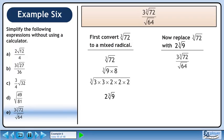Now replace the cube root of 72 with 2 times the cube root of 9. We write the original expression and substitute. Simplify the numerator: 6 over 8 reduces to 3 over 4. The final answer is 3 times the cube root of 9 over 4.